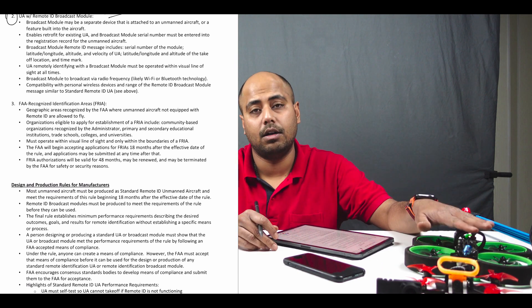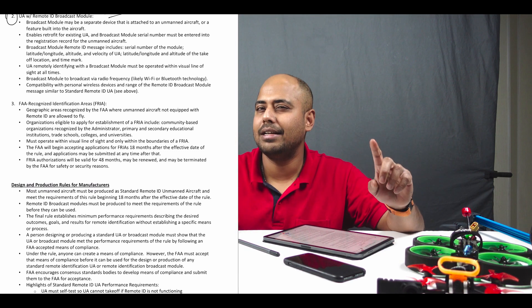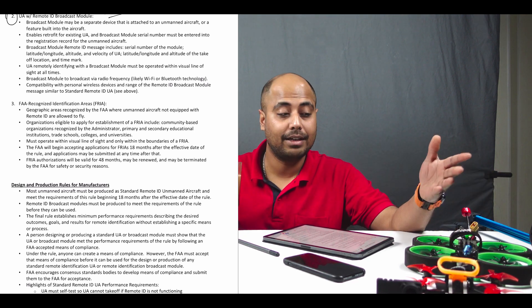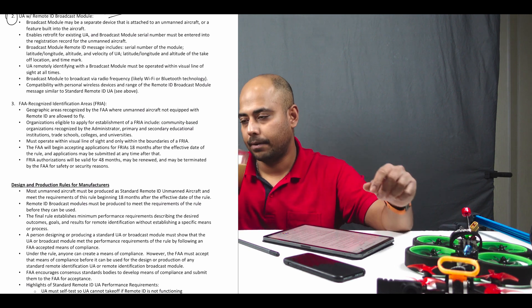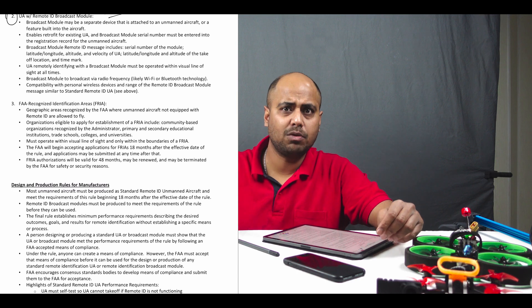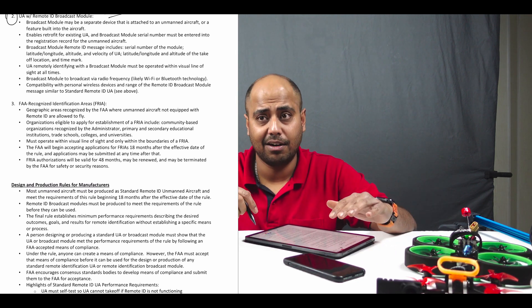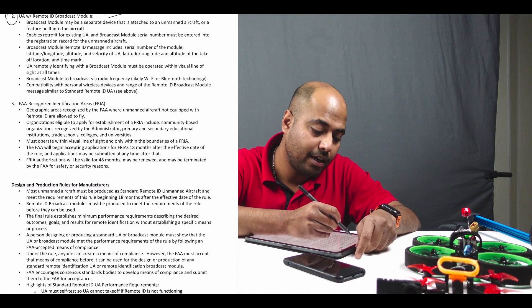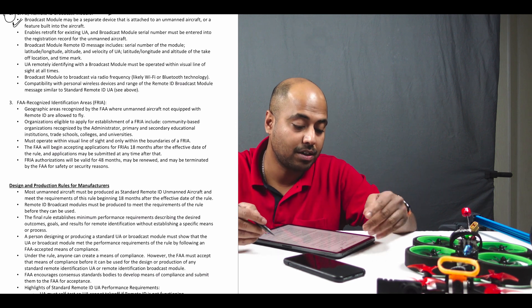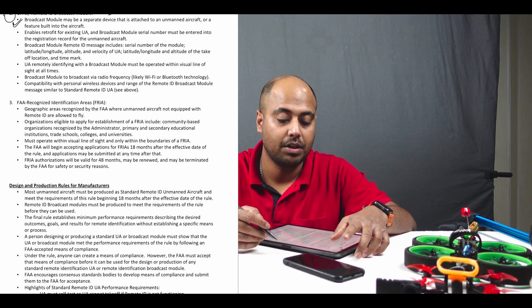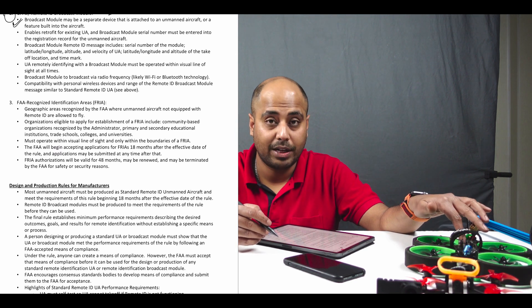For those building FPV drones, it's unclear whether the Remote ID identification device will be distributed directly to manufacturers like iFlight and others, or whether it's something pilots have to install themselves with proper paperwork. If you're planning to get a drone, going through a manufacturer is probably the safest approach, as this hobby is coming under increasing restriction. The broadcast module may be a separate device attached to the aircraft or a built-in feature, enabling retrofit of existing UAs. The broadcast module serial number must be entered into the registration record.